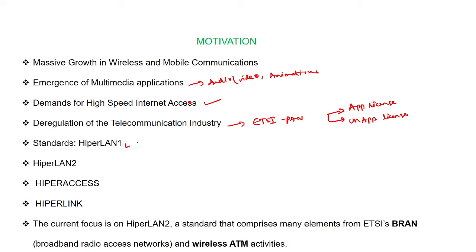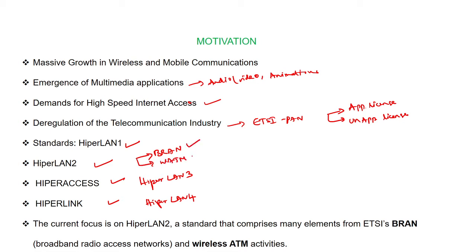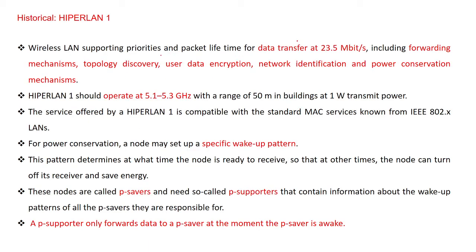The standards in HiperLAN are HiperLAN Type 1, Type 2, Type 3, and Type 4. HiperLAN 1 and 2 are direct standards. HiperLAN Type 3 is called HyperAccess, and Type 4 is called HyperLink. Among these, HiperLAN 2 is very important since it supports two networks: Broadband Radio Access Networks (BRAN) and Wireless ATM, making it the main focus under the ETSI standard.